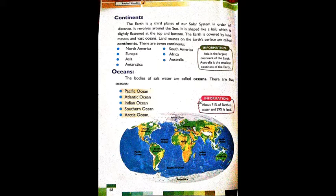The earth is covered by land masses and vast oceans. Some parts of the earth have water and some have land. The earth consists of different oceans and large pieces of dry land. The large land masses on the earth's surface are called continents.